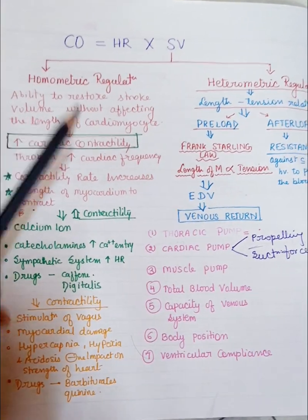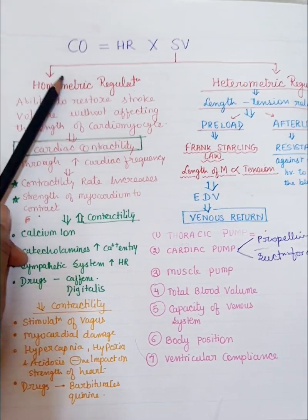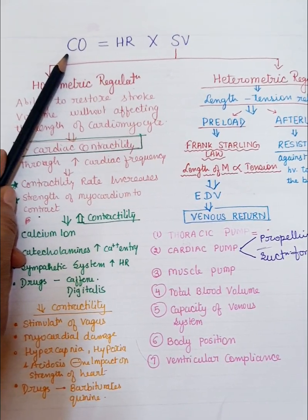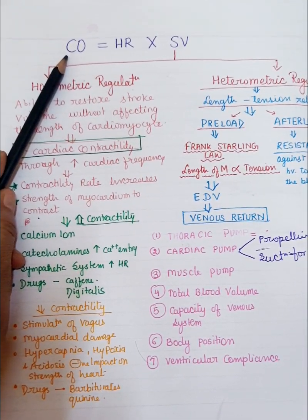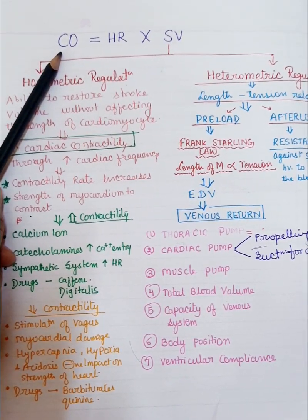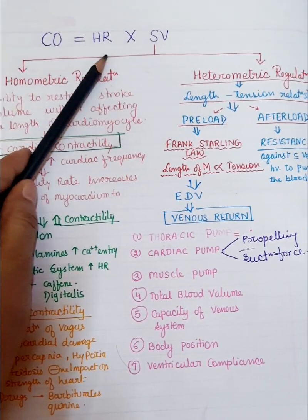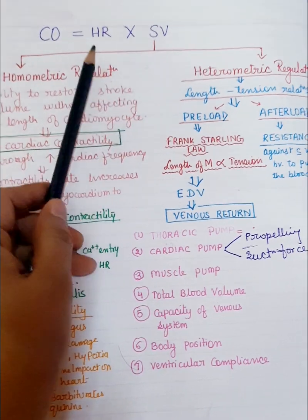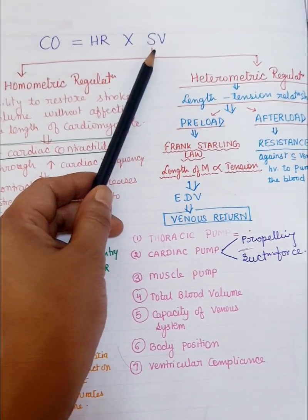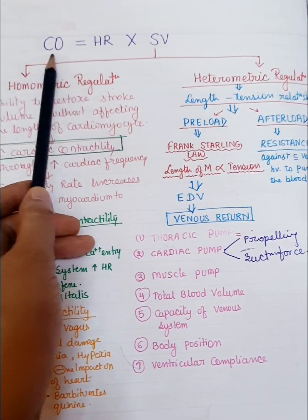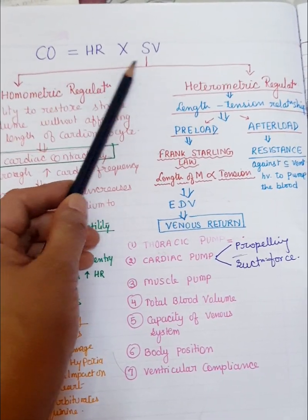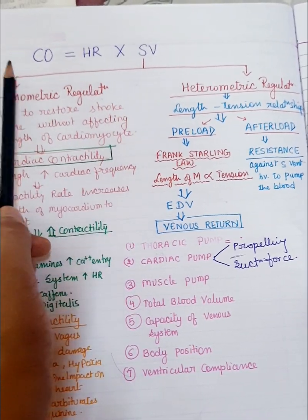Cardiac output means the amount of blood that is pumped out by each ventricle per minute. Cardiac output is the product of heart rate and stroke volume, so variation in heart rate and stroke volume affects the cardiac output. Factors that affect the heart rate and stroke volume also affect cardiac output.